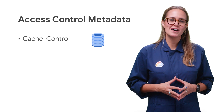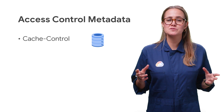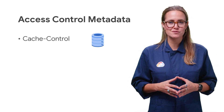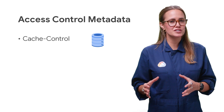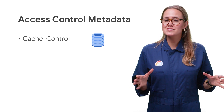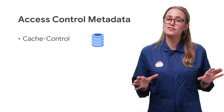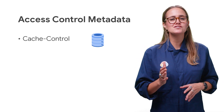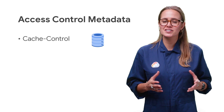The cache control metadata can specify two different aspects of how data is served from Cloud Storage: if it can be cached, and if it can be transformed. I won't say more about cache control here, because that'll be enough for a future video. You can also find out more in the documentation linked below.